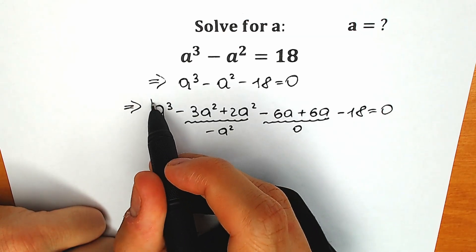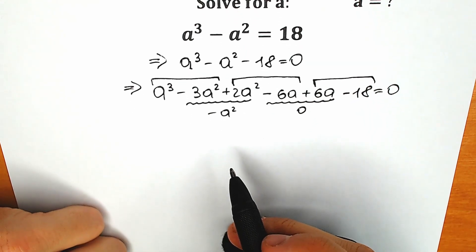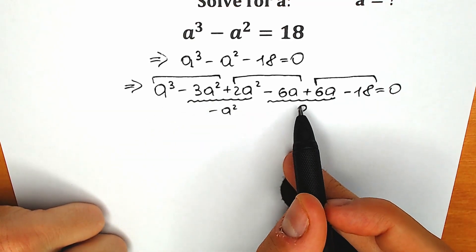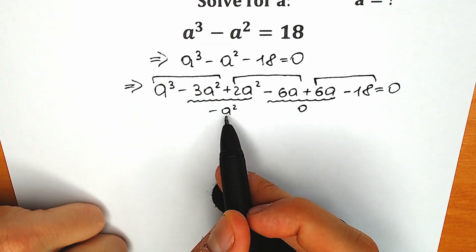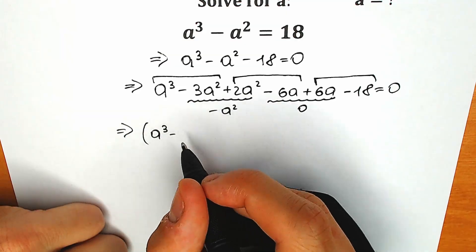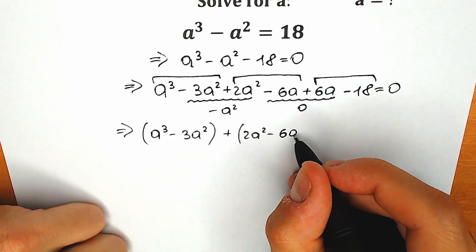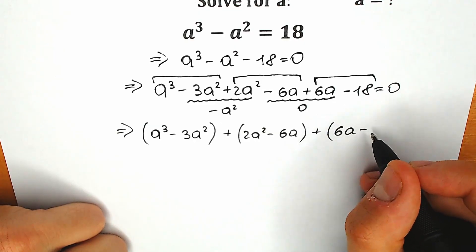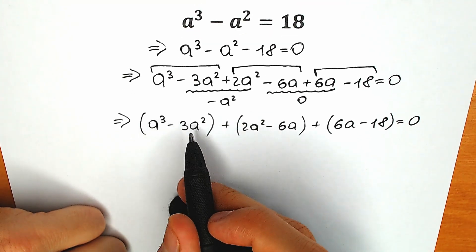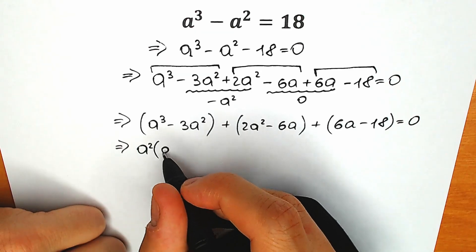And we have minus 18 equals zero. Now I want to group these expressions. So the first group is a cubed minus 3a squared, the next group is plus 2a squared minus 6a, and the last group is plus 6a minus 18. From the first group, a cubed minus 3a squared, we can factor out a squared to get a squared times (a minus 3).